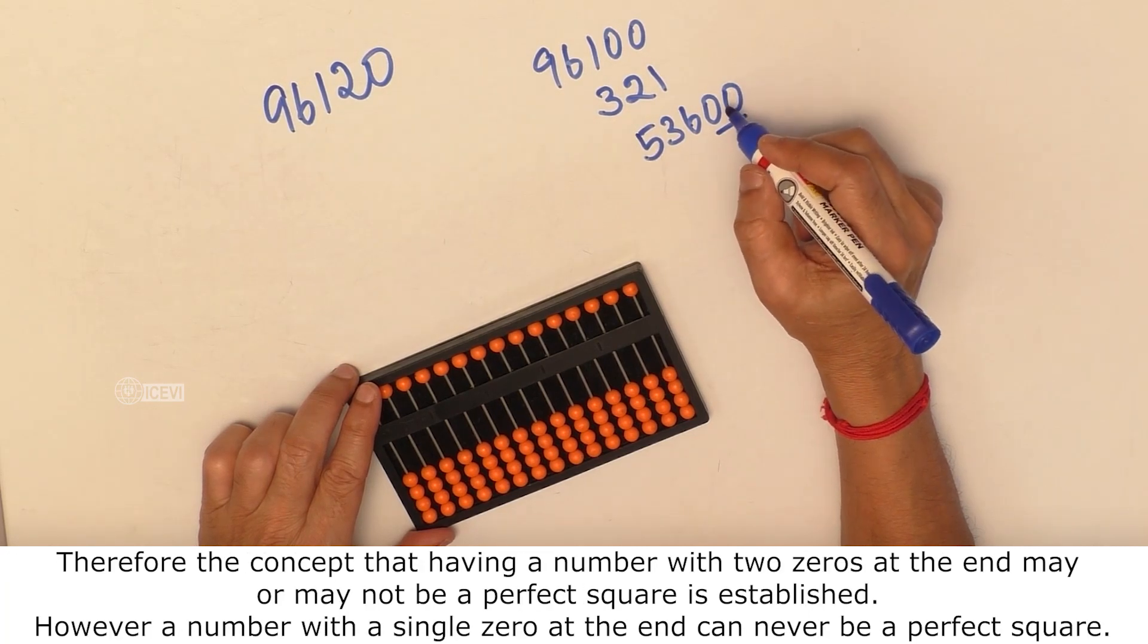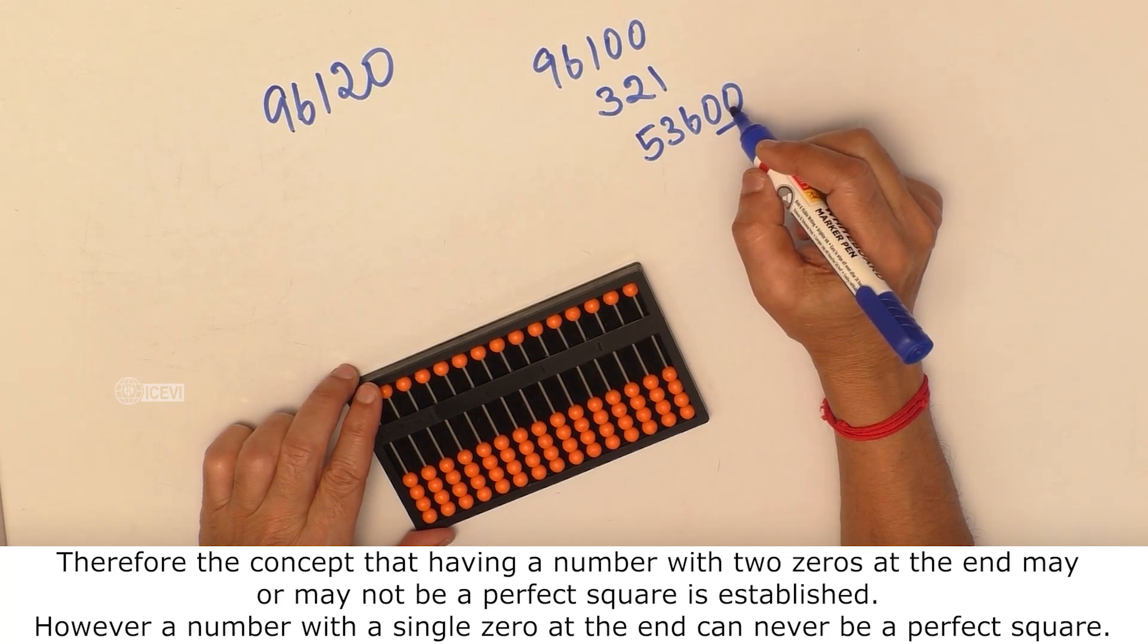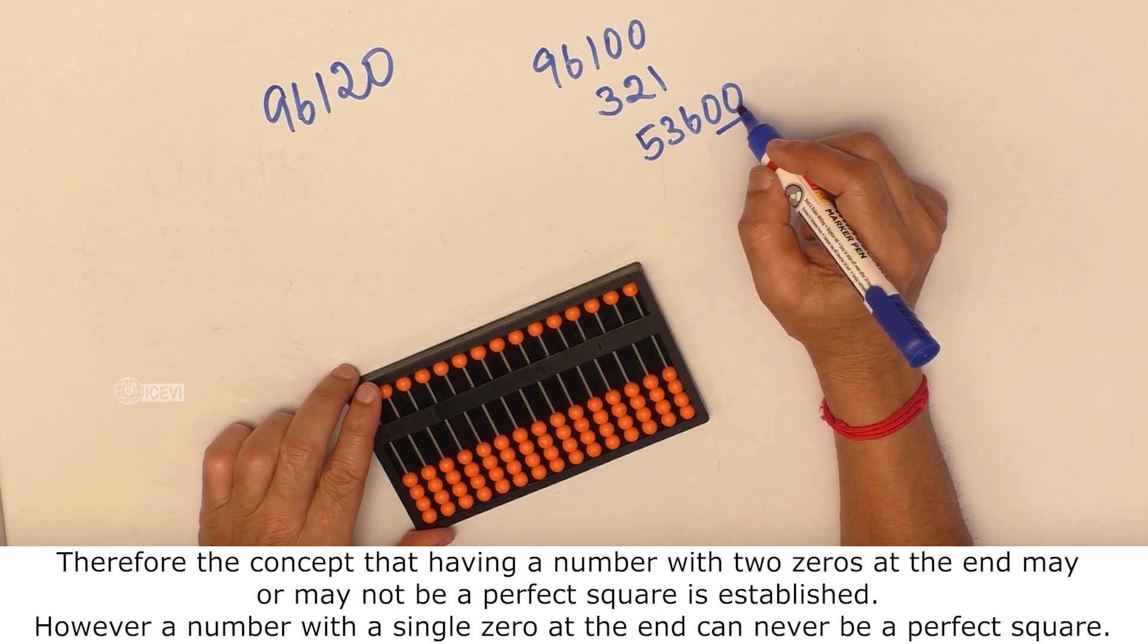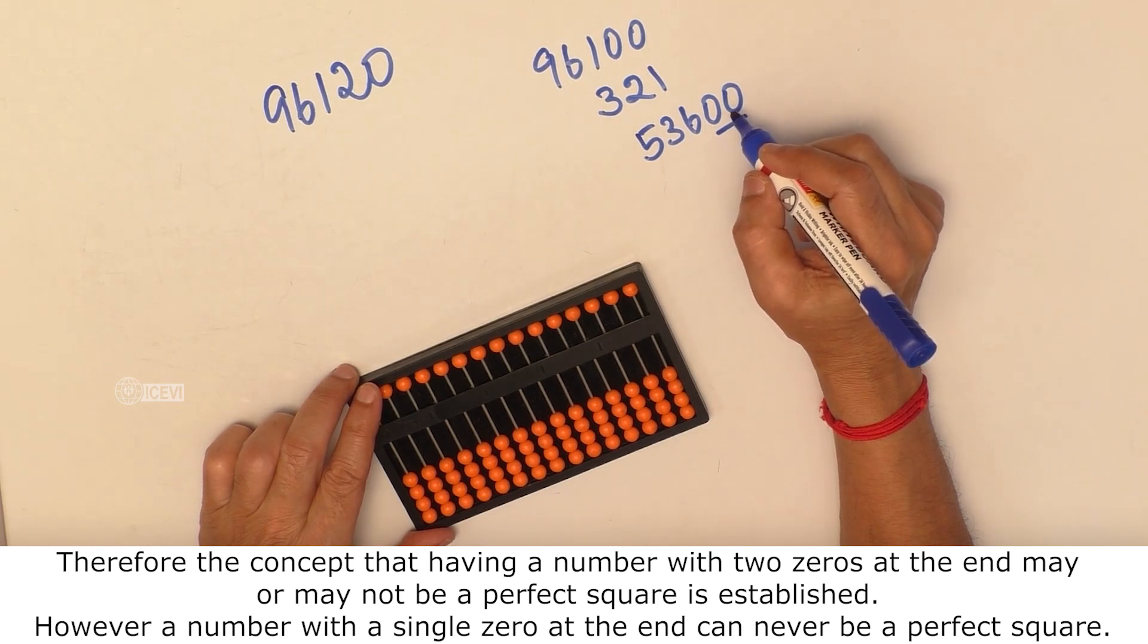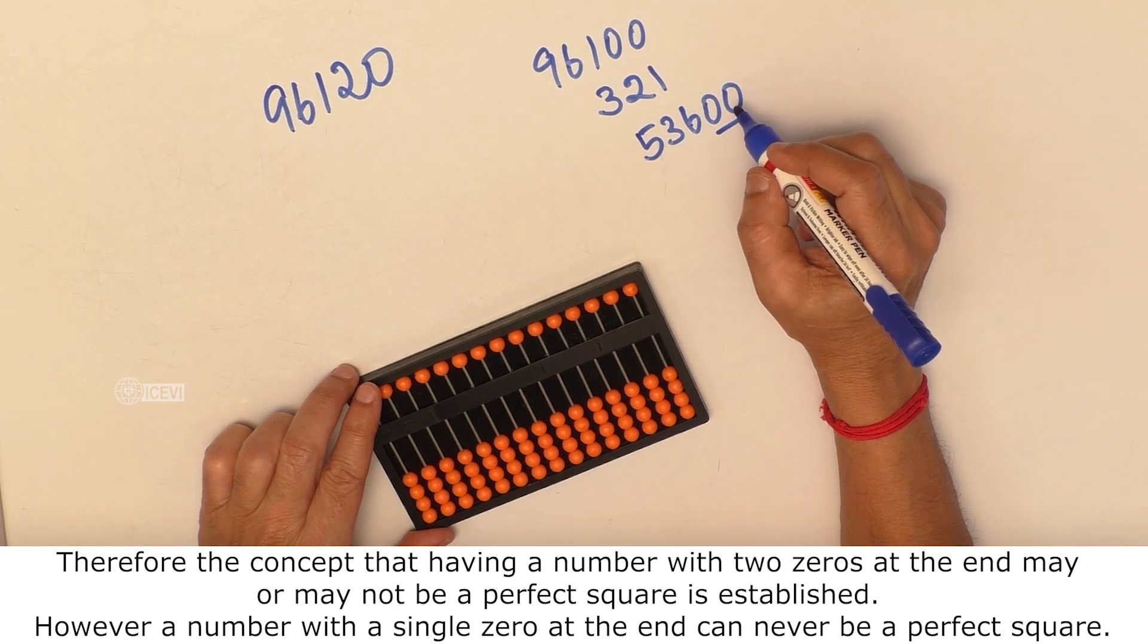Therefore, the concept that having a number with two zeros at the end may or may not be a perfect square is established. However, a number with a single zero at the end can never be a perfect square.